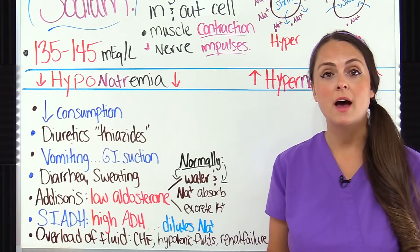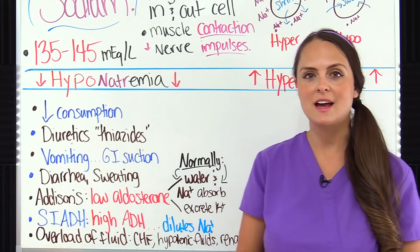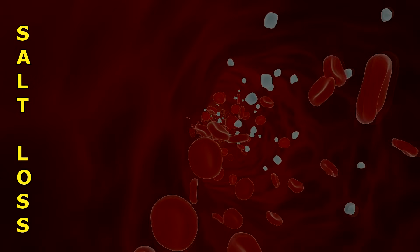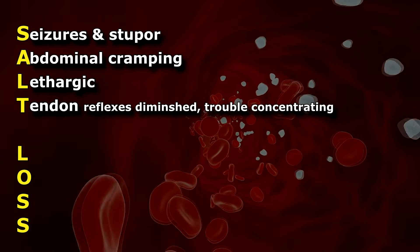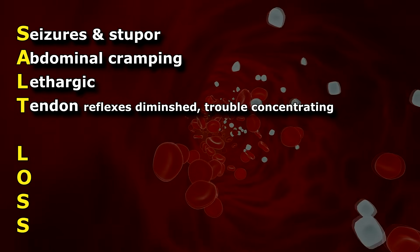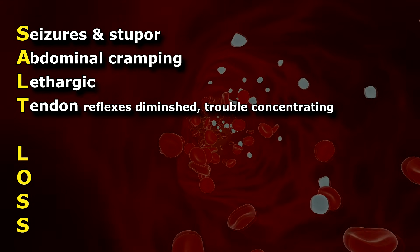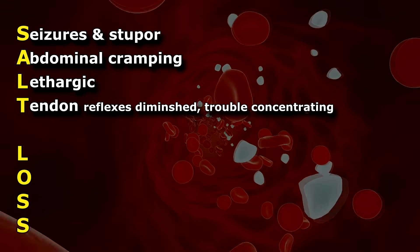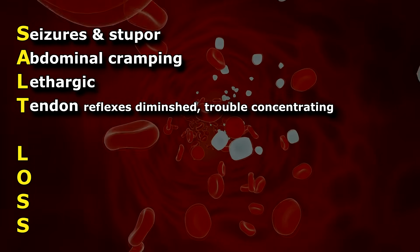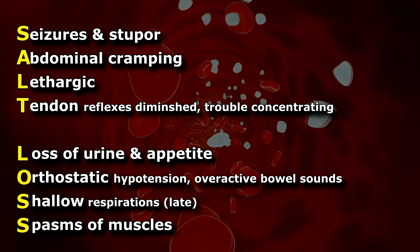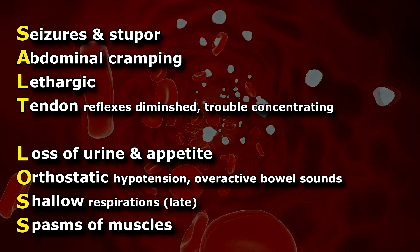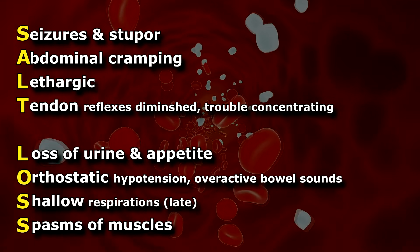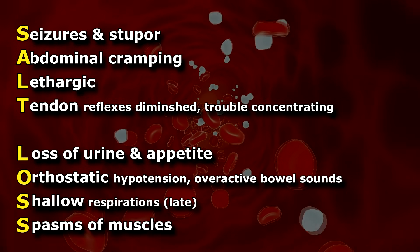Now let's look at the signs and symptoms of hyponatremia. To help you remember, use the mnemonic SALT LOSS. S is for seizures and stupor — a decrease in consciousness like confusion, related to nerve transmission being affected and brain cells starting to swell. A is for abdominal cramping. L is for lethargic. T is for tendon reflexes diminished and trouble concentrating. L is for loss of urine and appetite. O is for orthostatic hypotension and overactive bowel sounds. S is for shallow respirations — happening late due to skeletal muscle weakness. And S is for spasm of muscles.